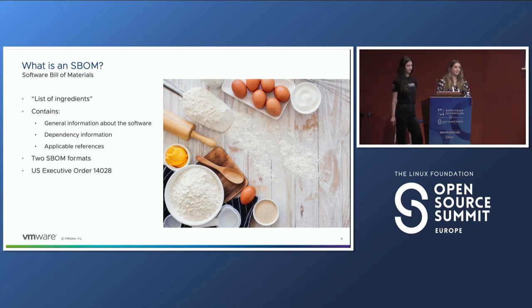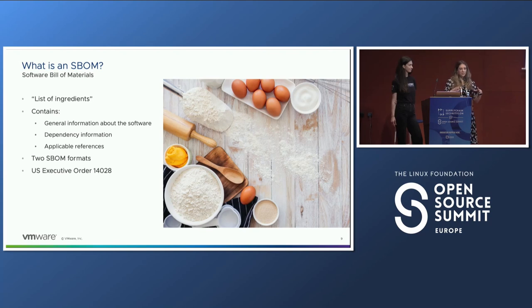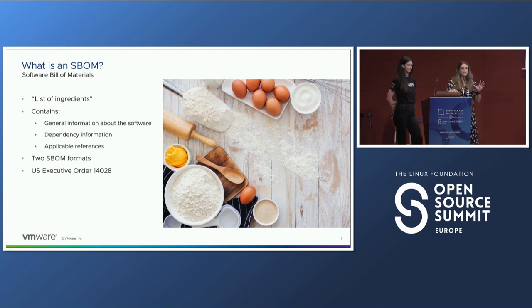In software terms, this list of ingredients will contain a handful of things. Most importantly, information about the software itself — the name, version, supplier, license, and checksum. A good SBOM will also contain a list of dependencies with that same set of information per dependency. And then it will contain relationships about those dependencies to other software in the SBOM — either to other dependencies or to the top-level piece of software itself — helping us build that dependency graph so we understand what this software is built on.